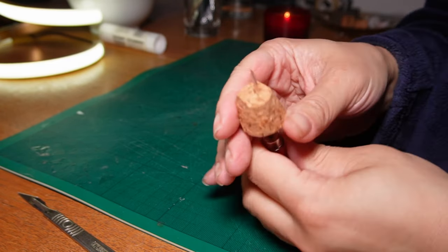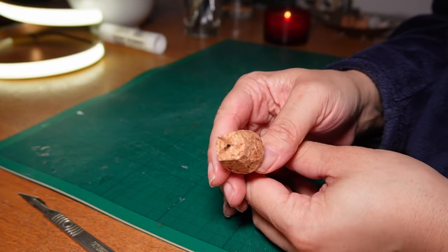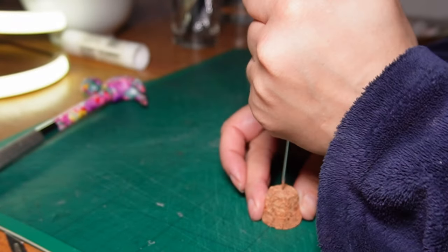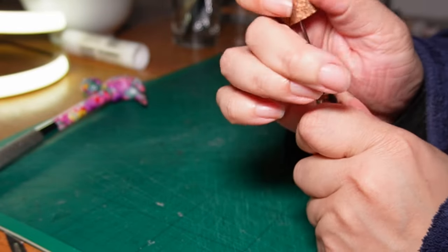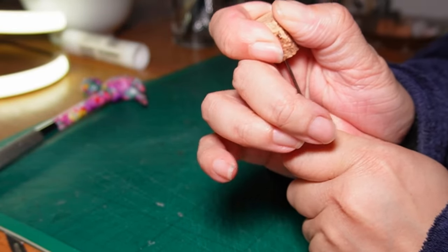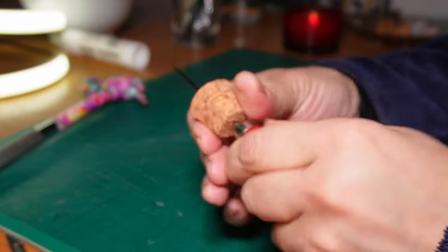To start, I drove the awl through the middle of the cork. You can measure it to get it exactly in the center. I just eyeballed it. Go slowly and if you find yourself drifting off center, just pull it all back a little bit and reposition and go again. I then flipped the cork and worked from the other side to make sure it was even.